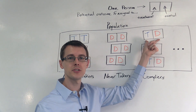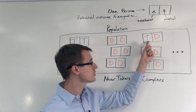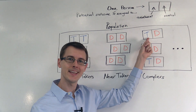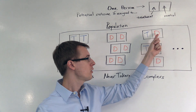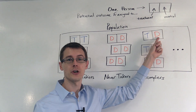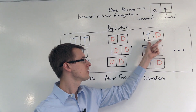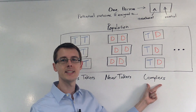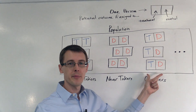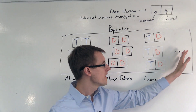Finally, I have this person here. When they're assigned to the treatment, they actually take the treatment — they get treated. When they're assigned to the control group, they don't take the treatment. So this person is a complier. And there are other people in the population who are also compliers.